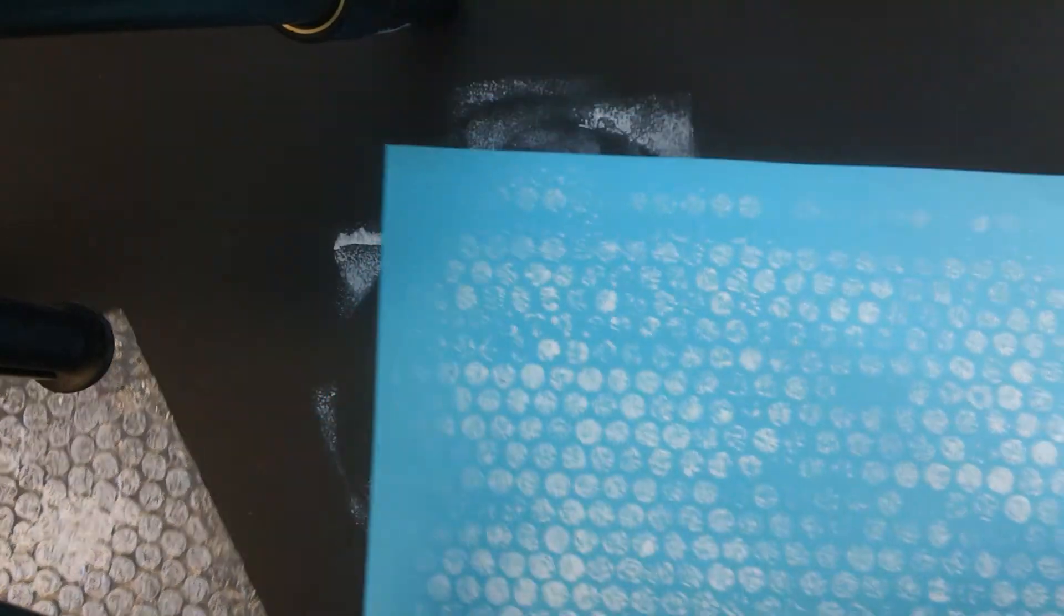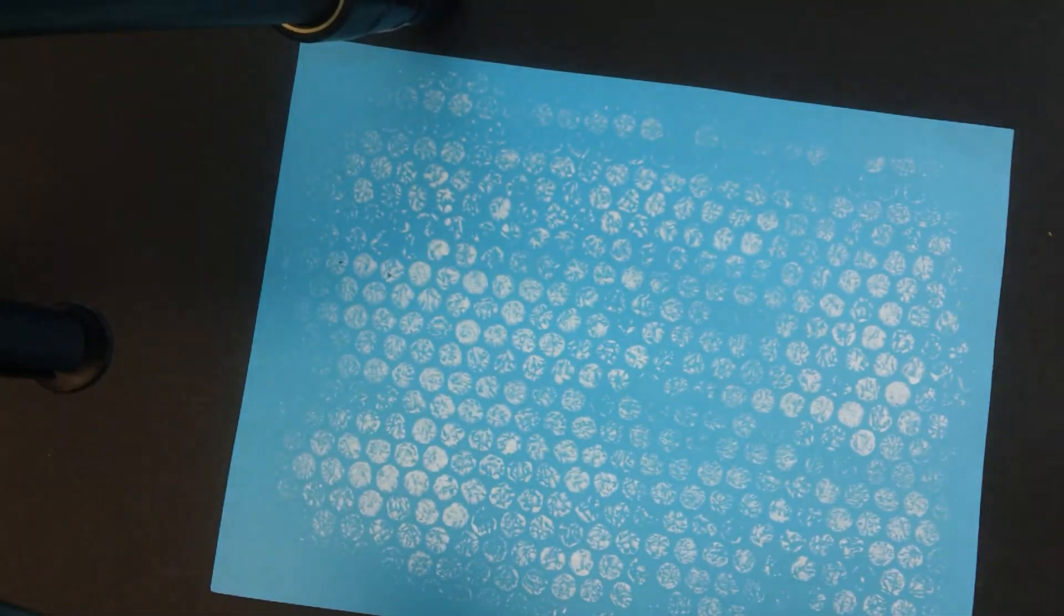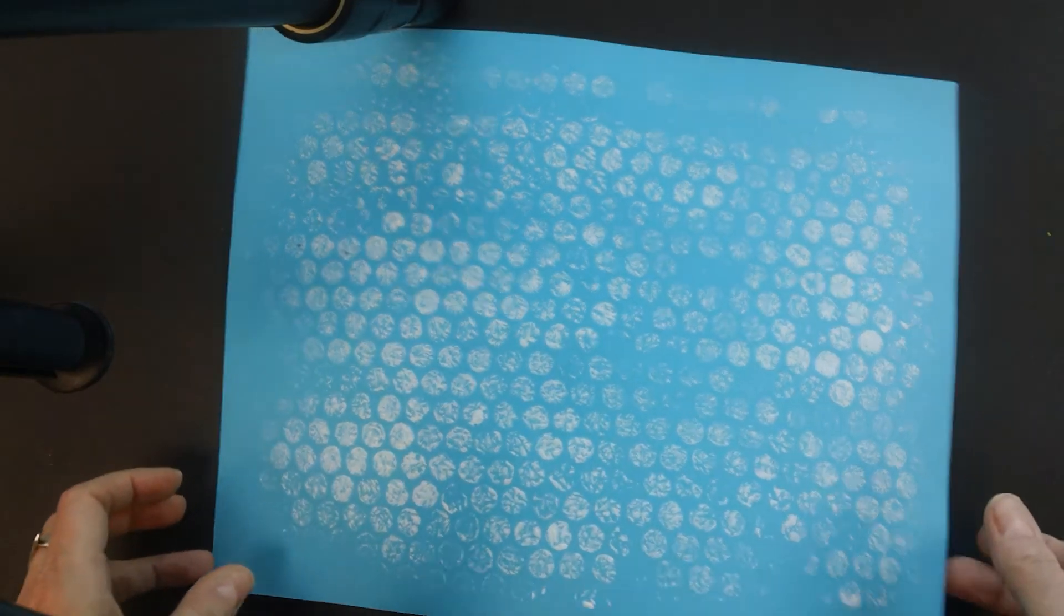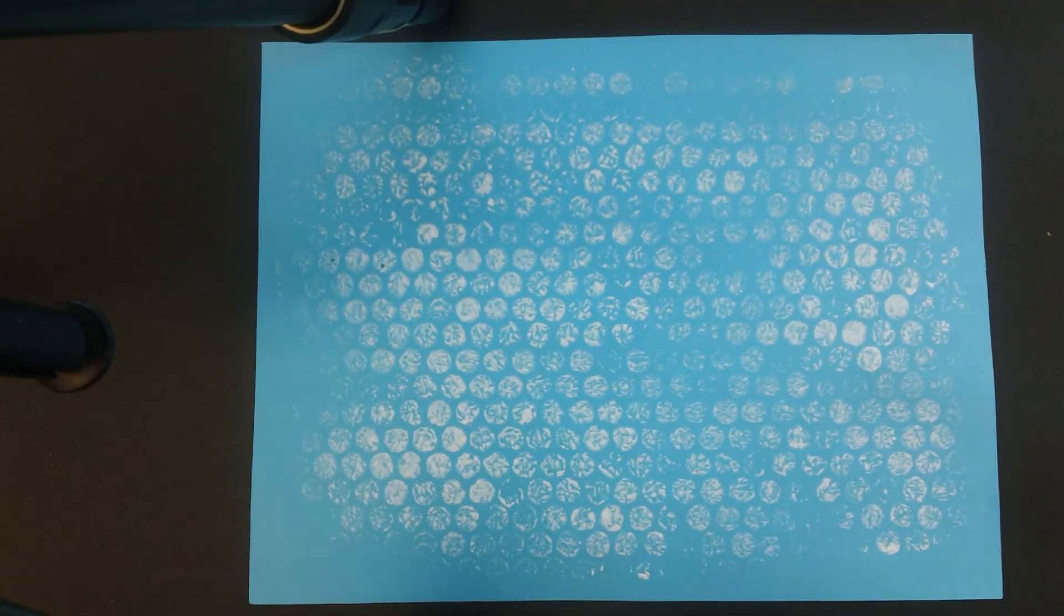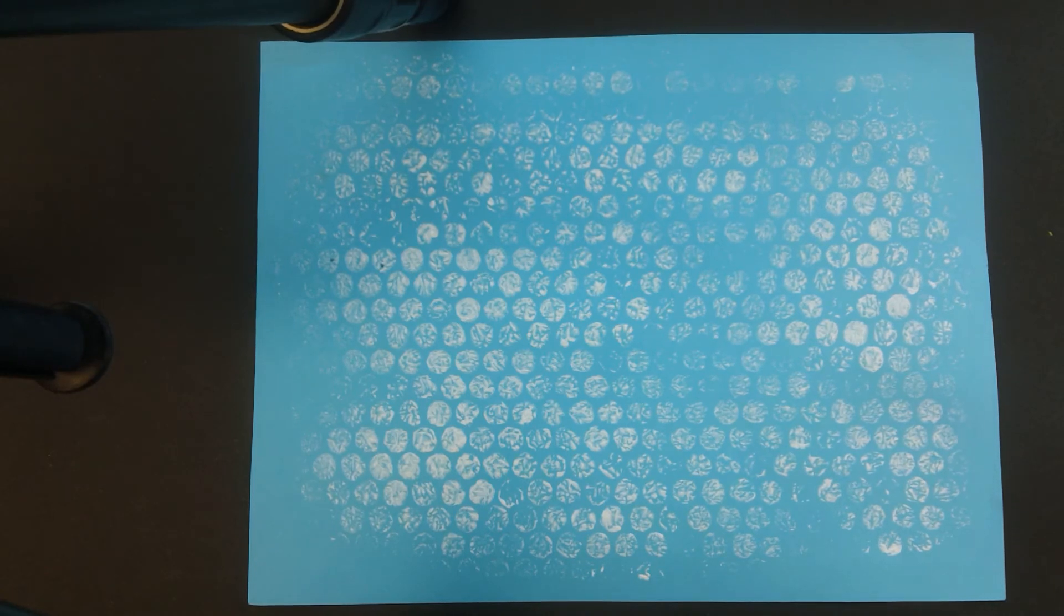Then I'm going to peel it up and there is the snowy background. So this kind of reminds us of snowflakes falling. So that is our bubble wrap background. I'll show you the next step in our next video. Thank you.